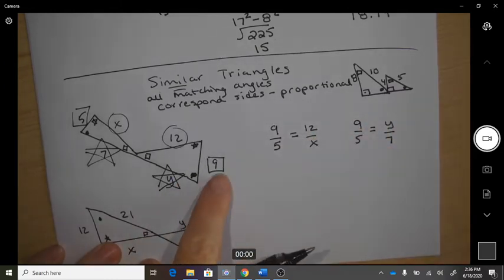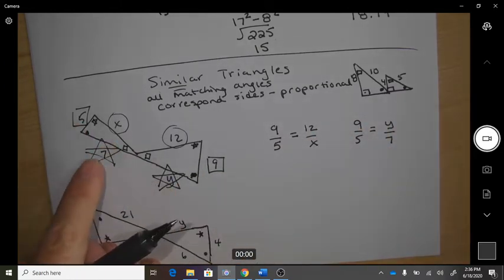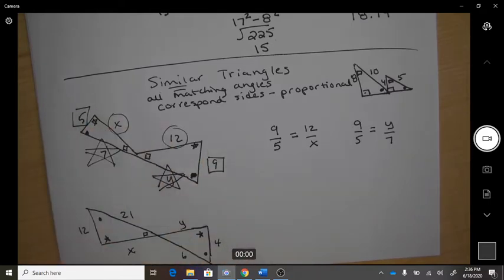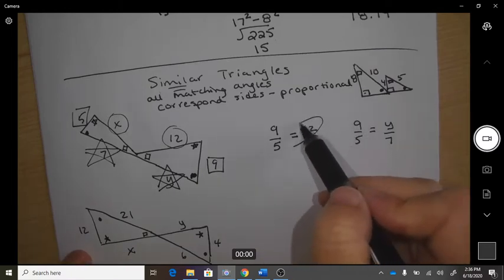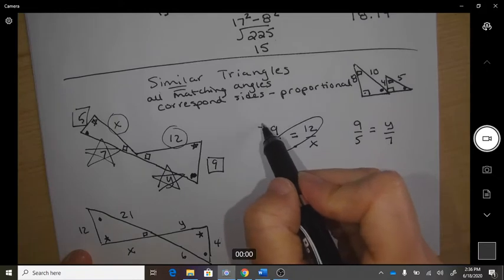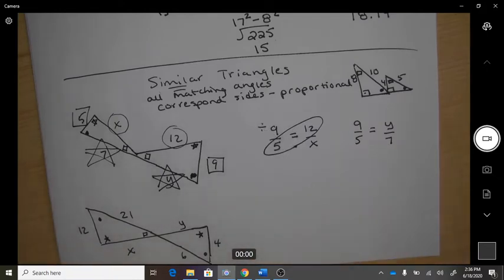Like 9 to 5 has to go y to 7, not 7 to y. You have to keep going in the same positions. So to solve this, I would do cross multiplication, which means multiply those two and divide by the leftover.